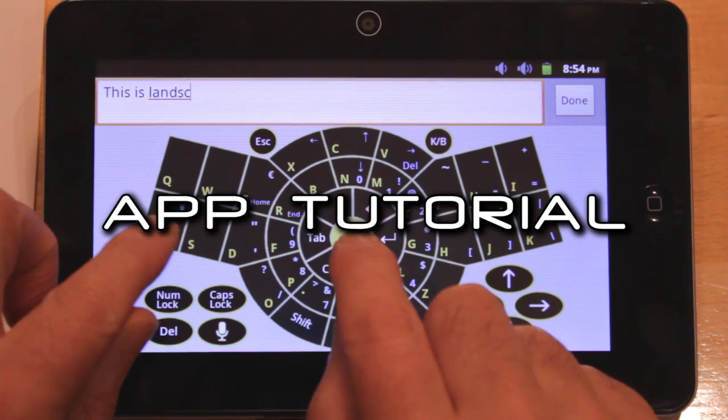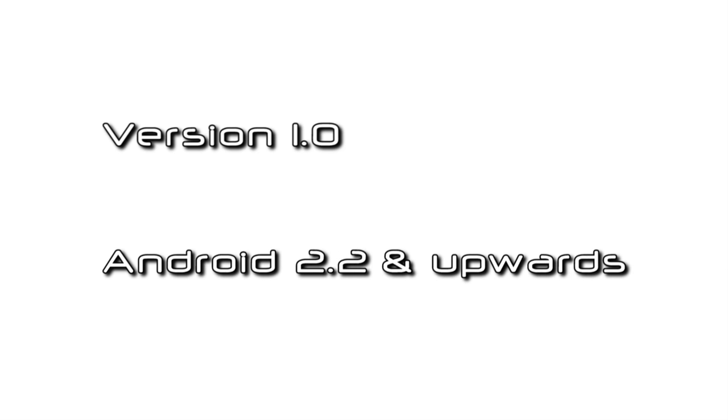Welcome to the B-Radar Radial Keyboard App tutorial. This version 1 keyboard app runs on Android devices operating on Android version 2.2 and upwards.